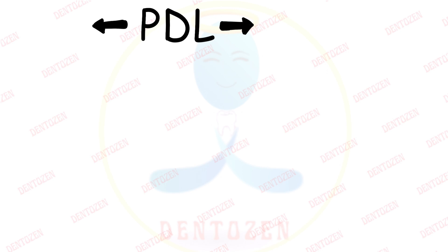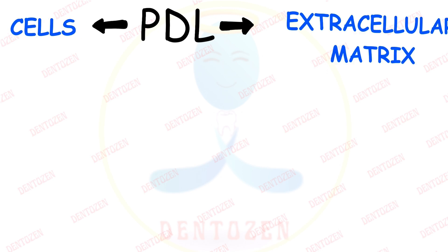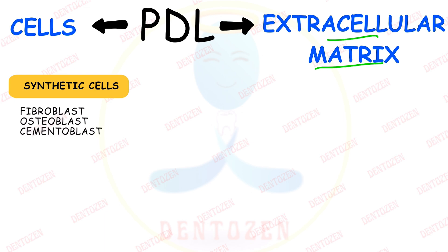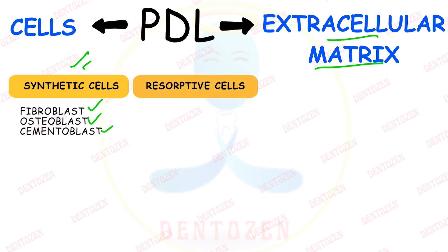The composition of PDL mainly includes cells and extracellular matrix. There are five important cell types. Synthetic cells include fibroblasts (form fibers), osteoblasts (form bone), and cementoblasts (form cementum). Fibroblasts also degrade collagen fibers, so a fibroblast is both a synthetic and resorptive cell for collagen fibers. For bone, the resorptive cell is the osteoclast; for cementum, it is the cementoclast.